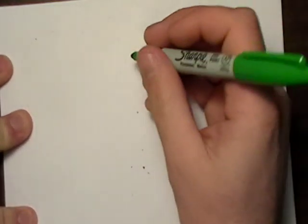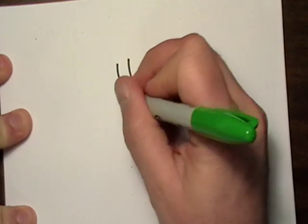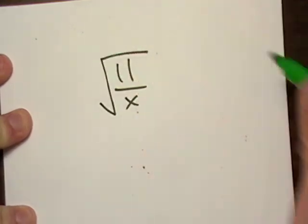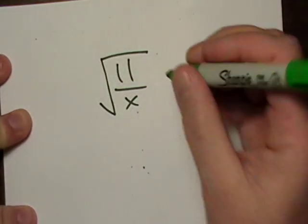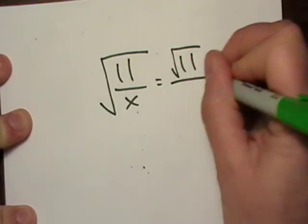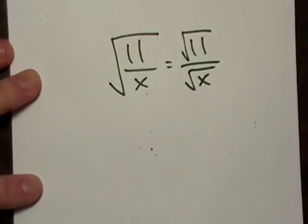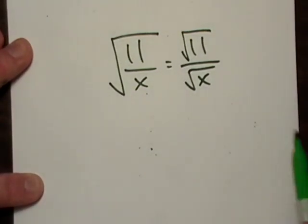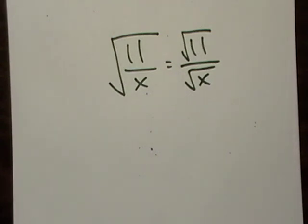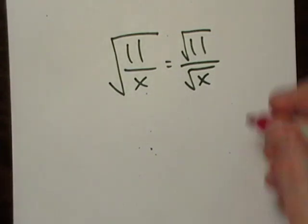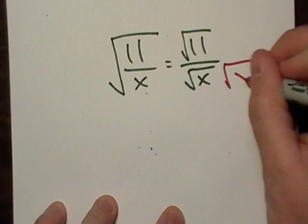What I'm going to do now is 11 over √x. Notice that's equal to—you can break the radical up like that, it's no problem, we can do that.